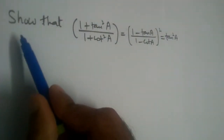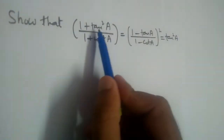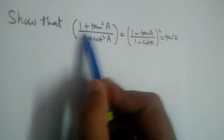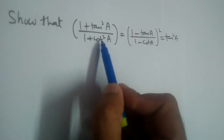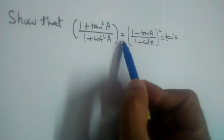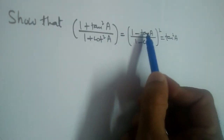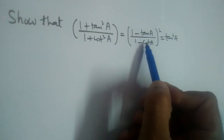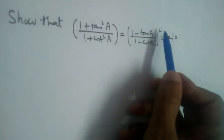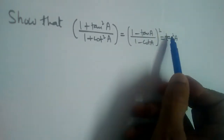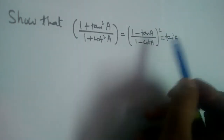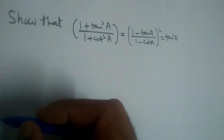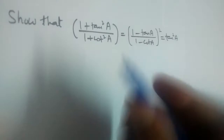Let us solve this problem: show that (1 + tan²a) / (1 + cot²a) = (1 - tan a) / (1 - cot a) whole square = tan²a.